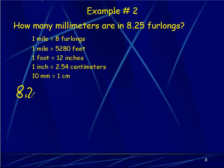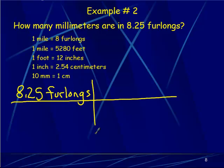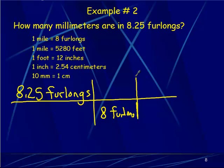Let's try another one. I'm going to put 8.25 furlongs. I look at the conversion factors and pick the one that has furlongs in it, because I want to cancel it — so I put it on the bottom. The first conversion gives 8 furlongs. In this first conversion, they're not all 1s across the bottom — whatever I put down there, I put what it's equal to above it. I've now converted from furlongs to miles.